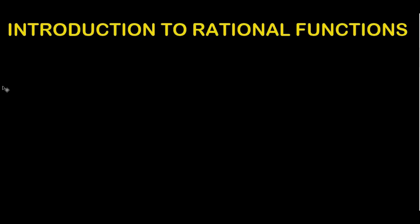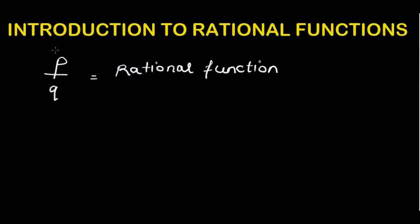In this lesson we would understand what are rational functions. Rational functions are the functions that can be written in the form of a fraction. Any function that can be written in the form of p over q is called a rational function. In a rational function, we would have a numerator and we would have a denominator.